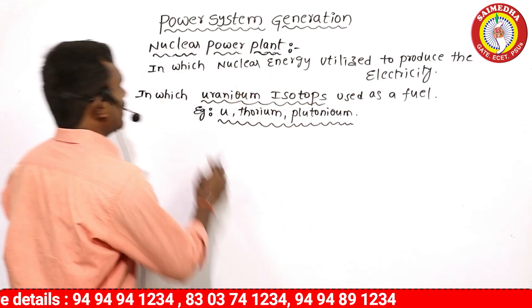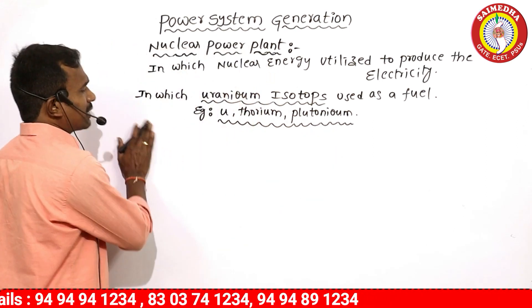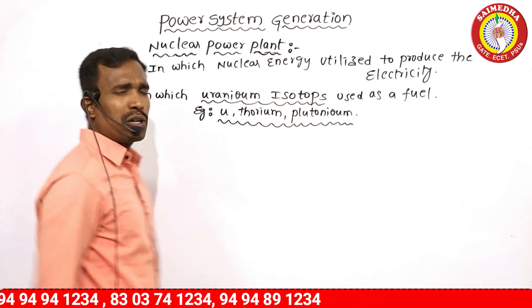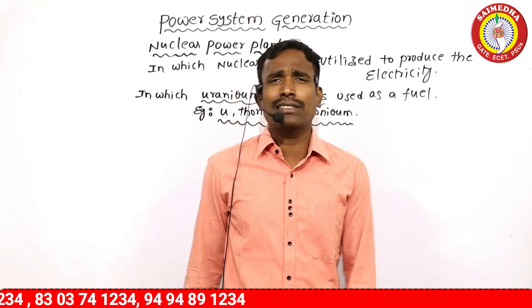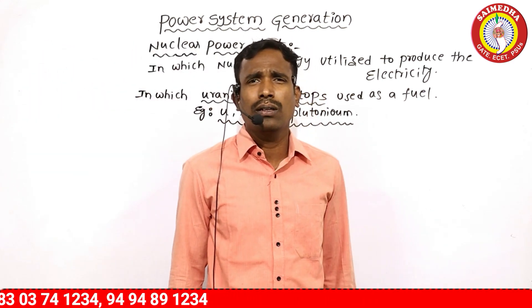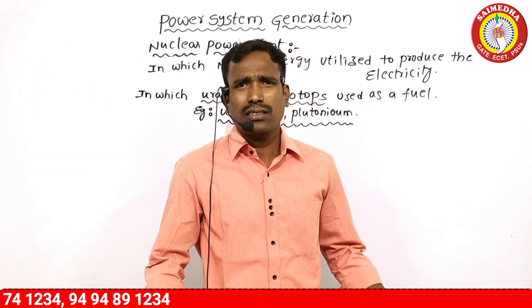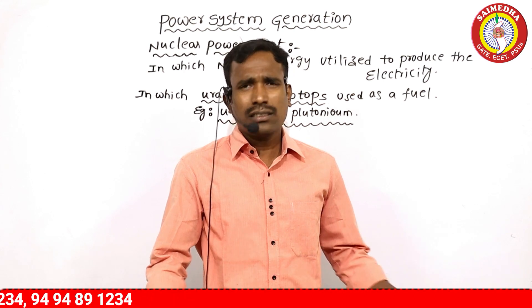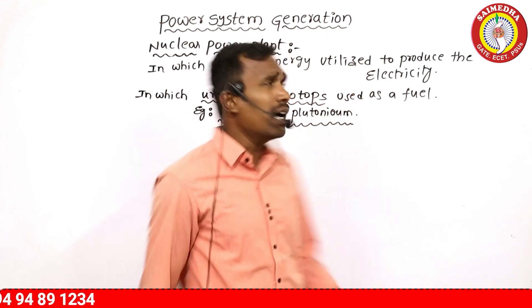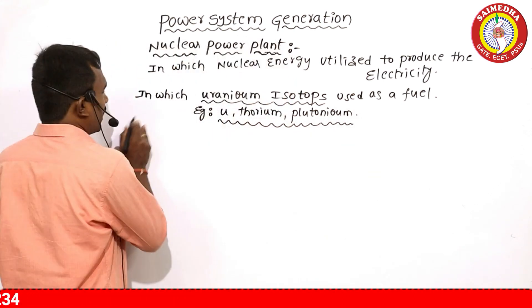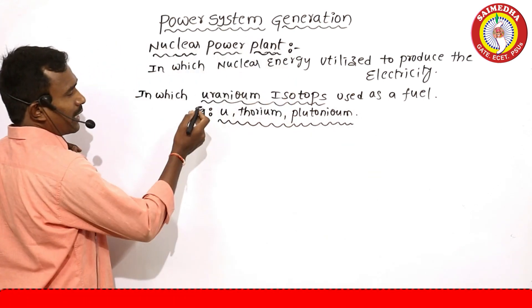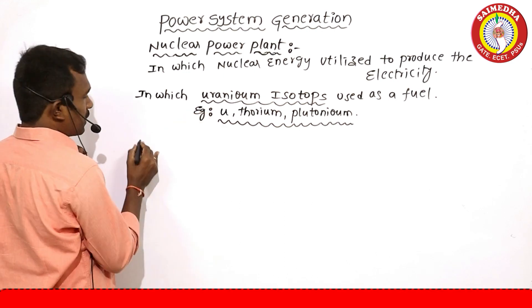Generally, for example, coal is measured in tons. So how much coal is needed? Tons. The quantity is measured in tons. These uranium isotopes — their nuclear atom quantities are different.